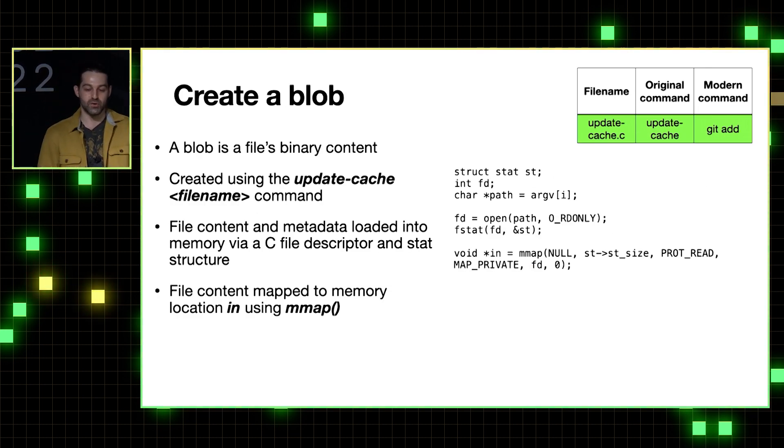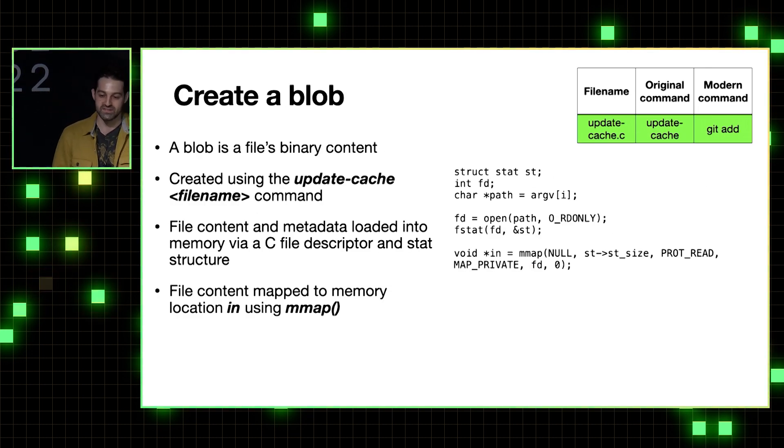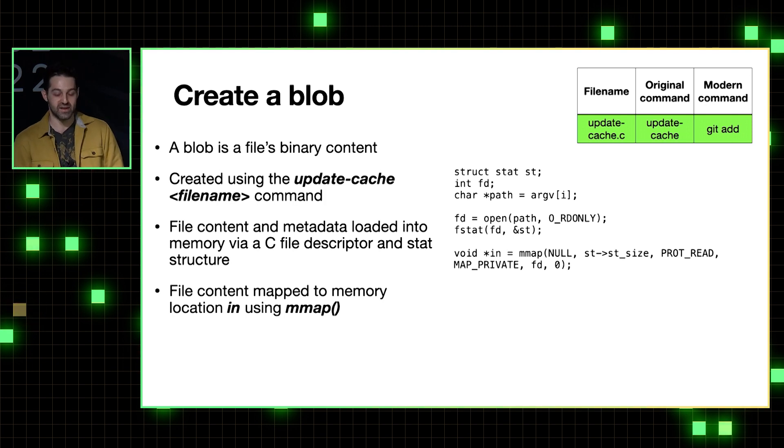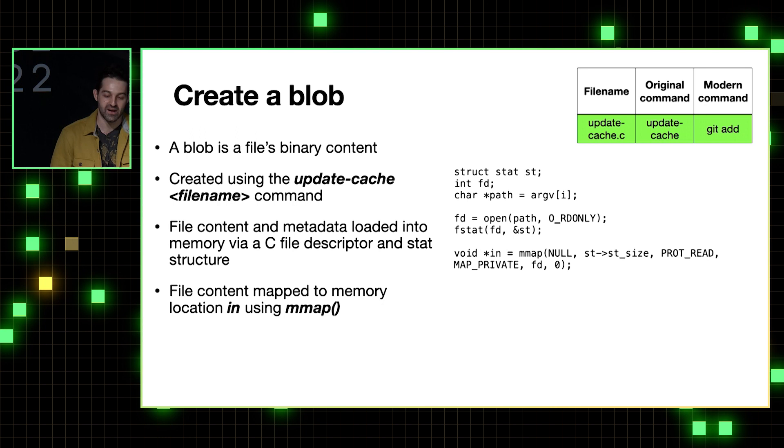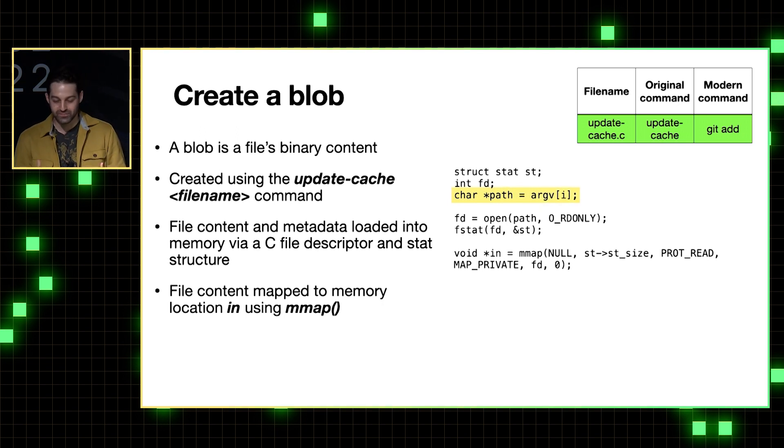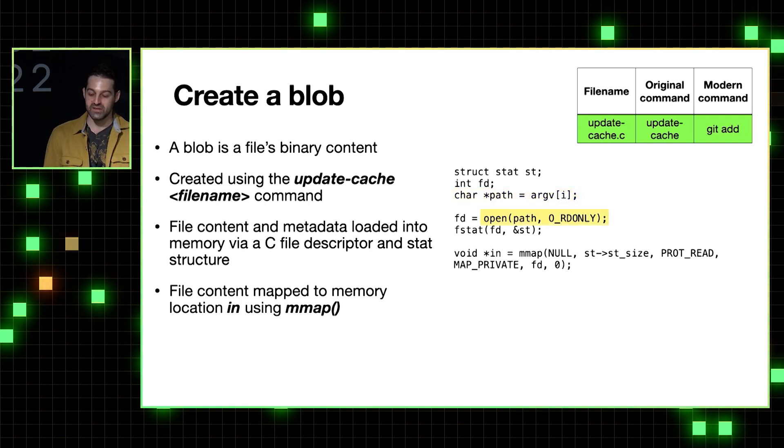So now let's see how Git's code creates a blob to go into the object database. And remember, a blob is just a file's binary content. And it's created when you run the command update cache along with the file name that you're telling Git to track. And remember, this is like a predecessor of git add. So it kind of makes sense that pretty much the first thing the code does is it grabs that file name that you passed in as a command line argument.